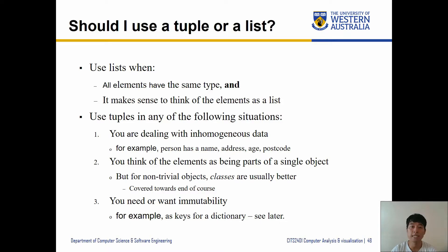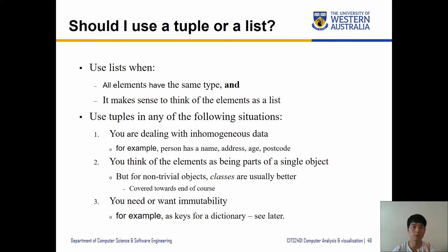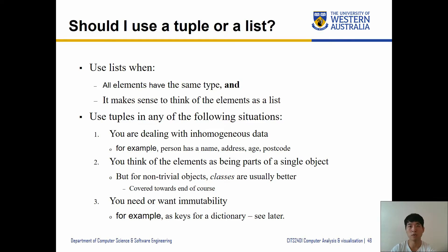Use tuples in situations where you're dealing with heterogeneous data — different characteristics that need to be stored together. For example, details about a person: name, address, age, postcode. Another case is when you think of elements as properties of a single object. Lastly, use tuples when you want immutability — you don't want data to be changed by other functions or programs. For example, keys for a dictionary are immutable objects; the word itself doesn't change even if its explanation does.